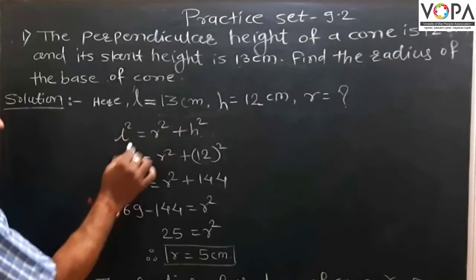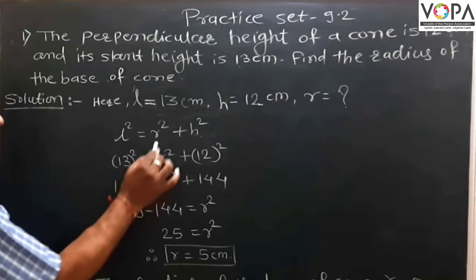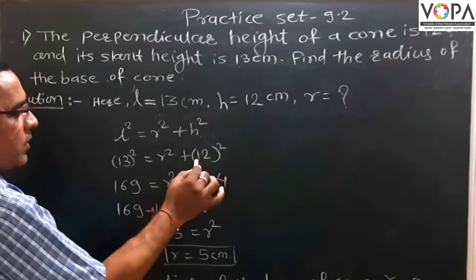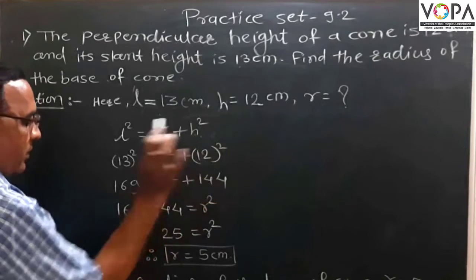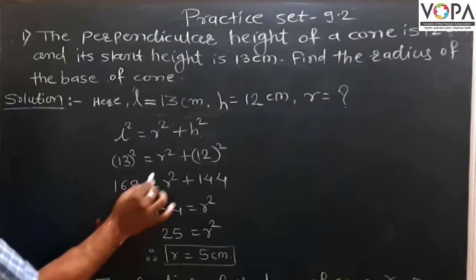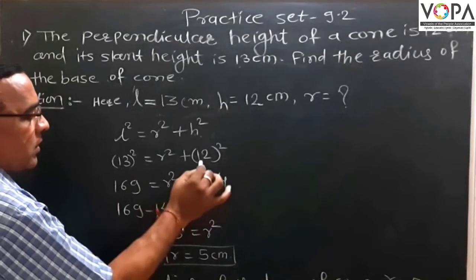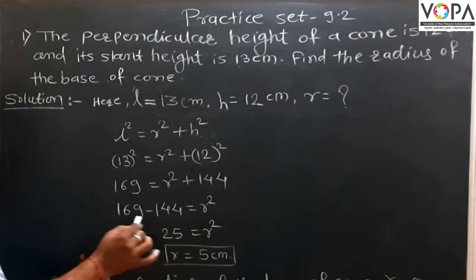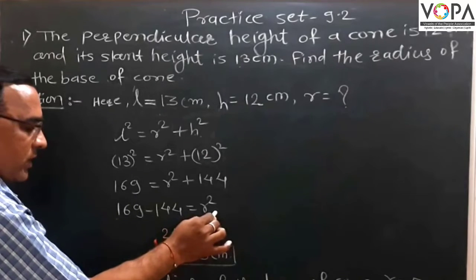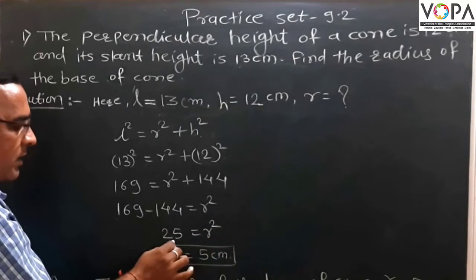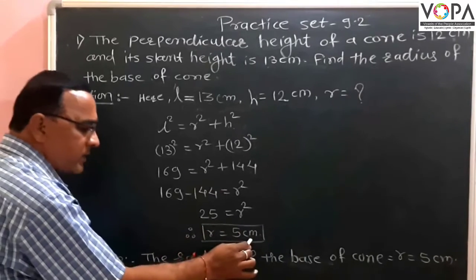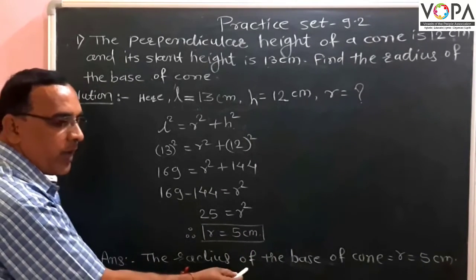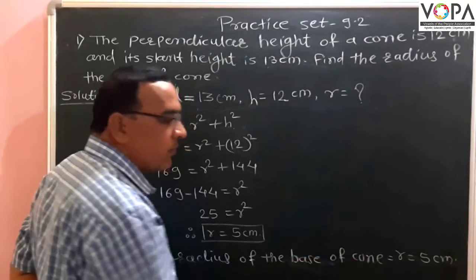Putting the values of L and H into the formula: 13² = R² + 12². So 169 = R² + 144. Therefore, 169 − 144 = R², giving 25 = R², so R = 5 cm. The radius of the base of the cone is 5 cm.